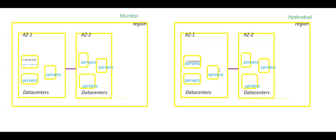Now my question is: by default, is there any networking present between these two EC2 instances? One EC2 instance is created in Mumbai region and another EC2 instance is created in another region — is there any default networking present between these two EC2 instances?